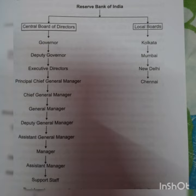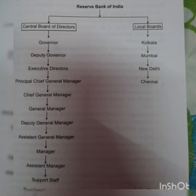The powers of the board rest with the governor, who is the chief executive officer of the bank. The governor has the responsibility of directing the affairs and business of the bank. The governor and deputy governors hold office for a period of five years and they are eligible for reappointment.